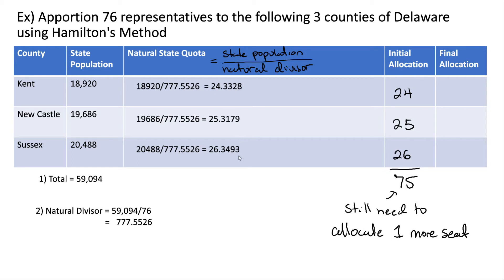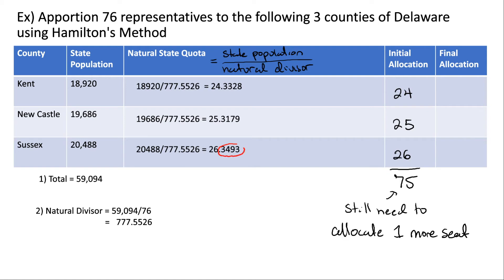We still need to allocate one more seat, so we look to see which state has the biggest decimal. We have 0.34, 0.31, and 0.33. The value 0.34 is the largest decimal. Note that these are all numbers that would normally round down, but we're still going to give that state an extra seat because they have the largest decimal. So Kent stays at 24, Newcastle stays at 25, and Sussex goes from 26 to 27 seats. This adds up to 76, which is the correct house size.